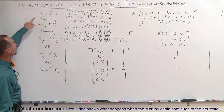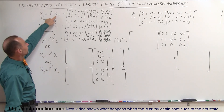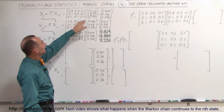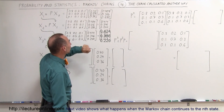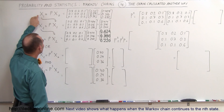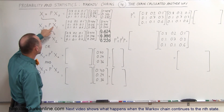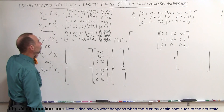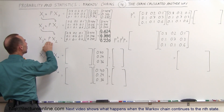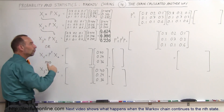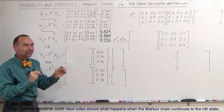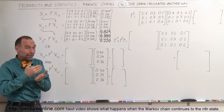In previous videos we've shown that if you start with the initial state, you can calculate the first state by taking the initial state and multiplying it times the probability matrix. If we then take the results of the first state and multiply it times the probability matrix, we get the second state. Multiply the second state times the probability matrix and we get the third state, and so forth. That's why we call it a chain — you keep doing the same thing over and over. Based on the probability, you can then predict what's going to happen in the future.